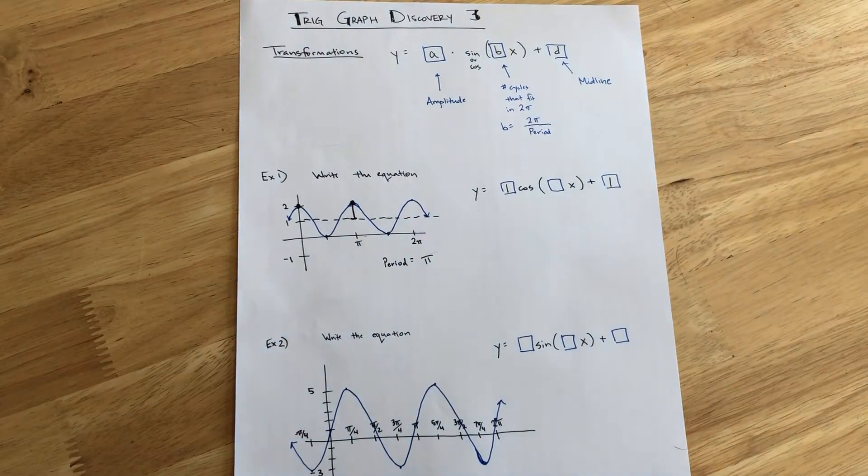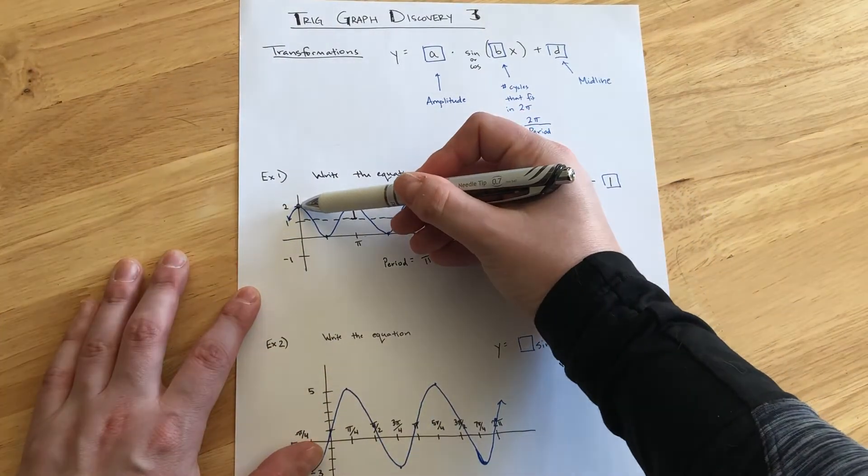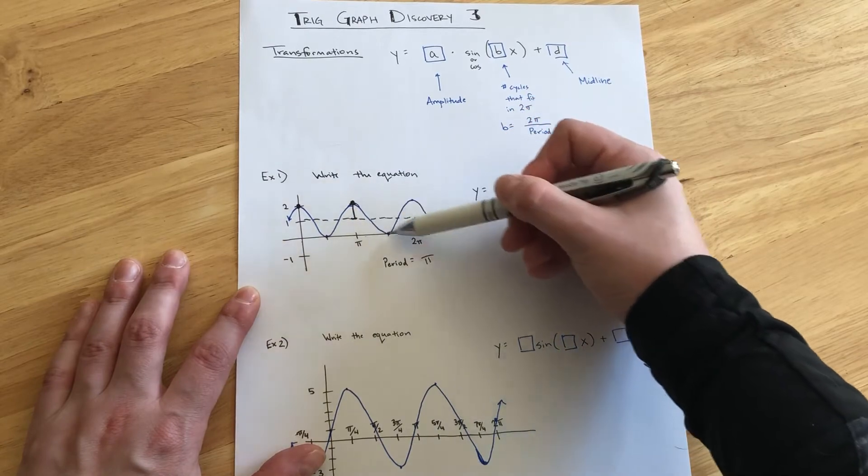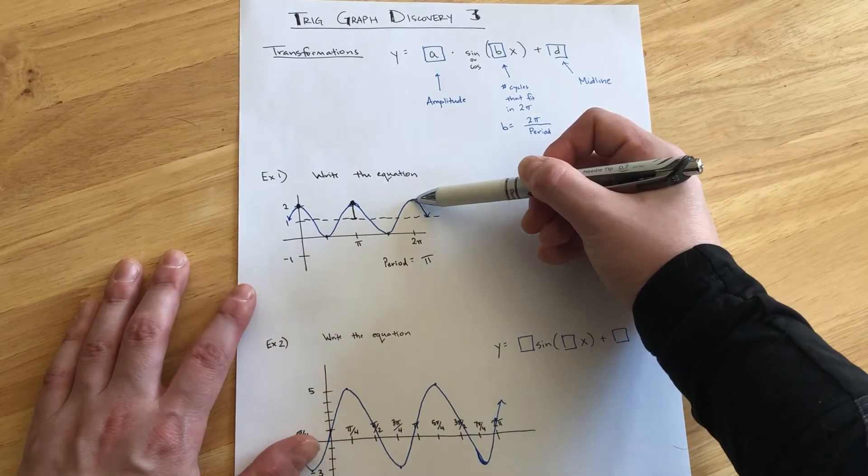Well, what that means is it's more frequent than the typical cosine function. In fact, in the space of 0 to 2π, we see that there are 2 full cycles that fit.